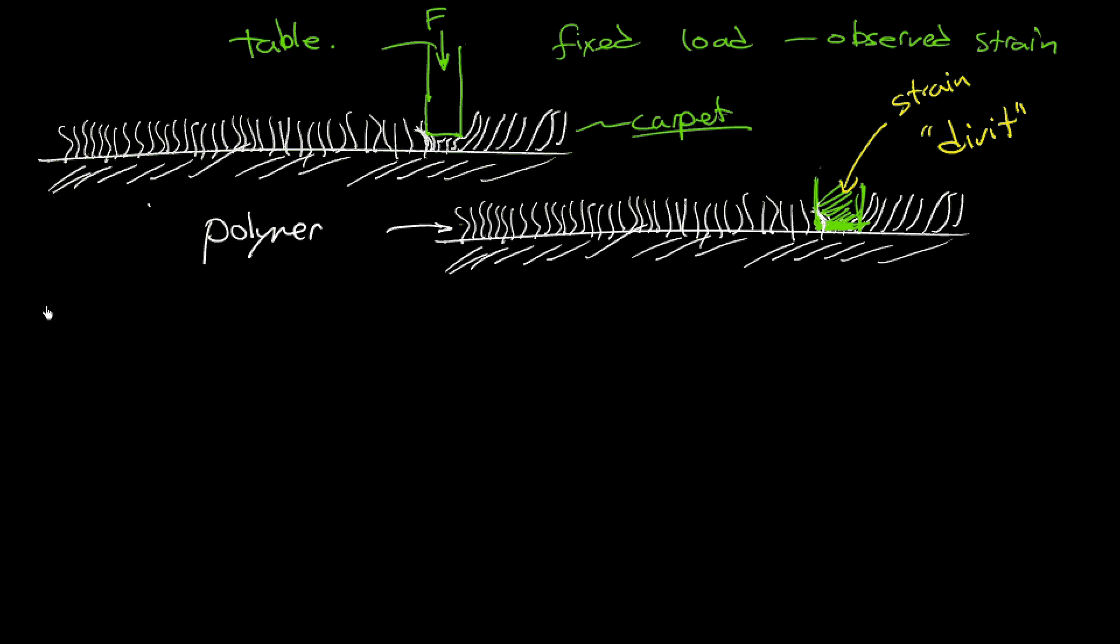That is a nice example to start with for describing viscoelasticity. But one way, at least, that it's often quantified is by doing this: by applying a fixed strain epsilon naught, and then observe the stress decreasing as a function of time. So that would be sigma t as a function of time.